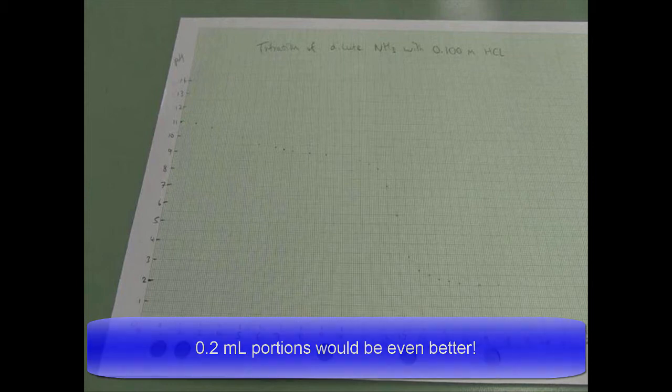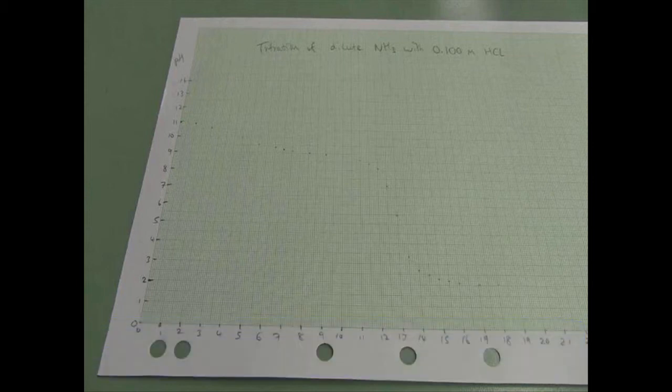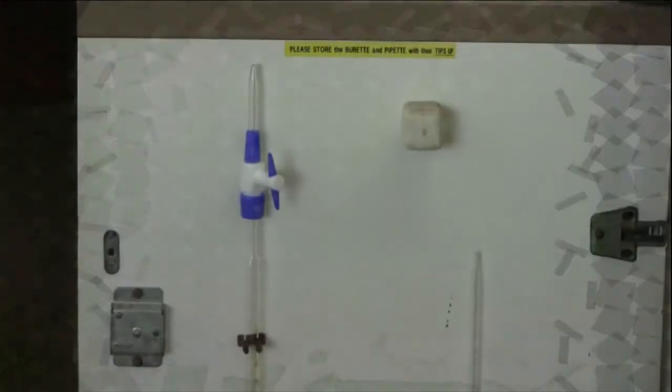Then once you're through the steep section, back out on the flat section of your graph, you can go back to one ml additions until you've reached 25 ml of added acid. If you follow this procedure, you should end up with a fantastic titration curve, which you can then use for your report and for your calculations. Please don't forget when you're putting your pipettes and burettes back in the cupboard that they go in with the tips facing upwards.